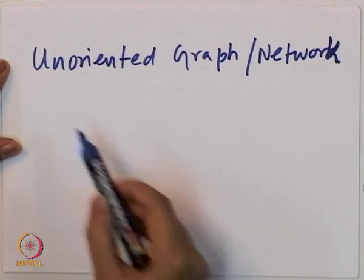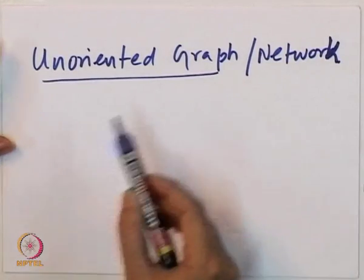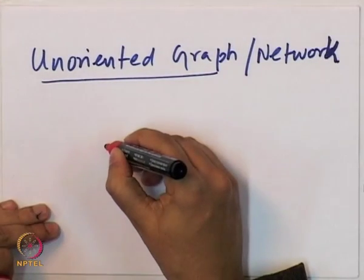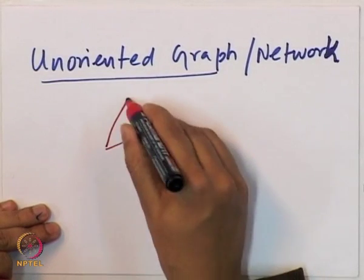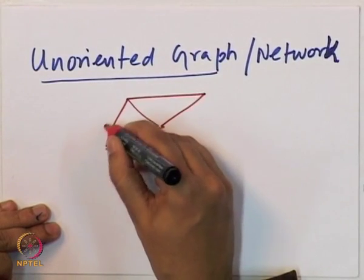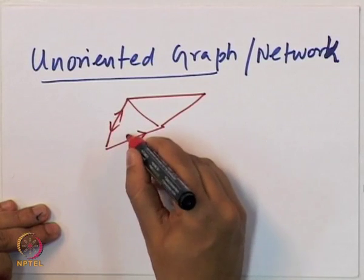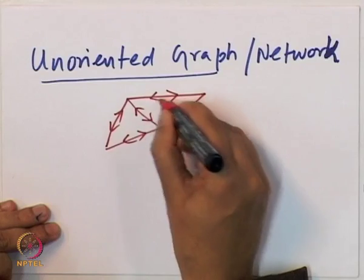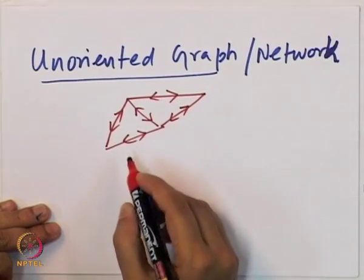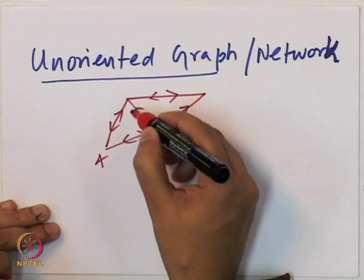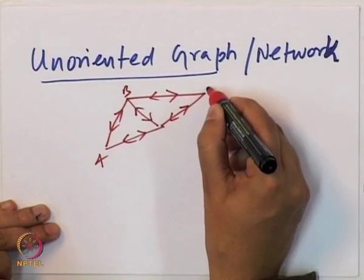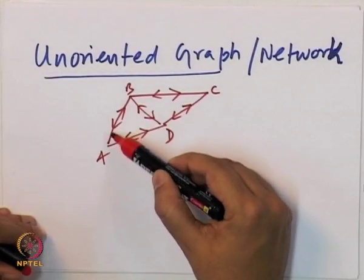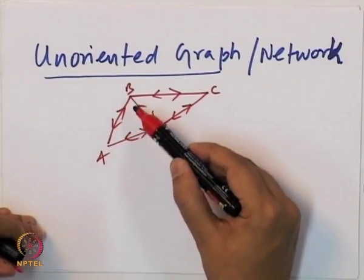Unoriented means there is no preferred direction. You can think of it like a network of train stations where trains are running in both directions. You can go from A to B to C to D, and the arrows are nothing but train connections in both directions.